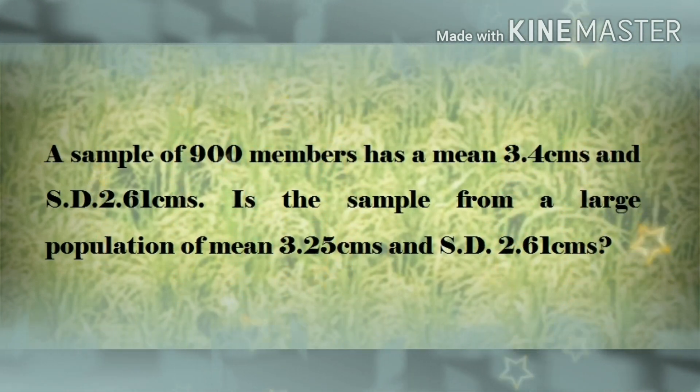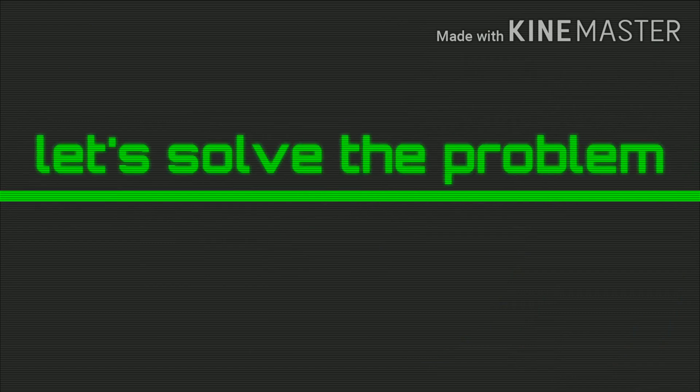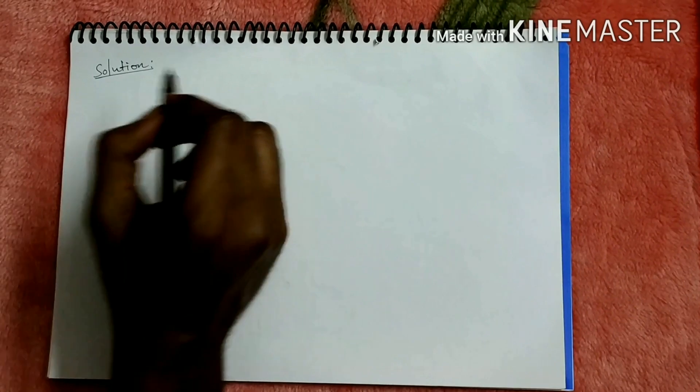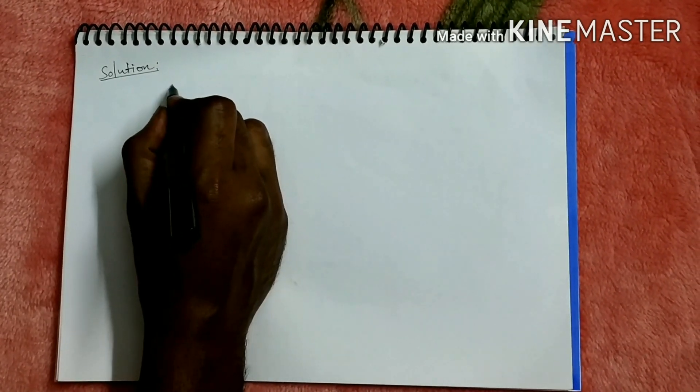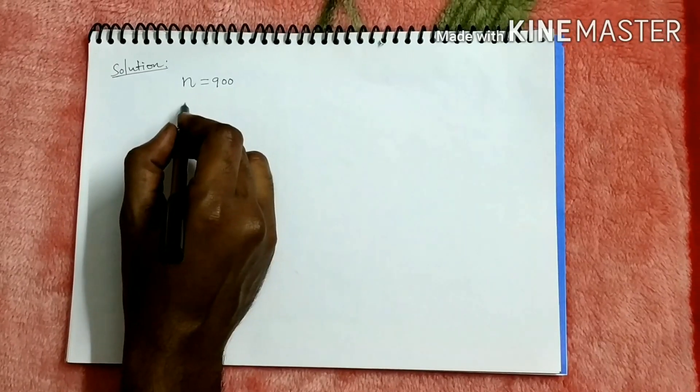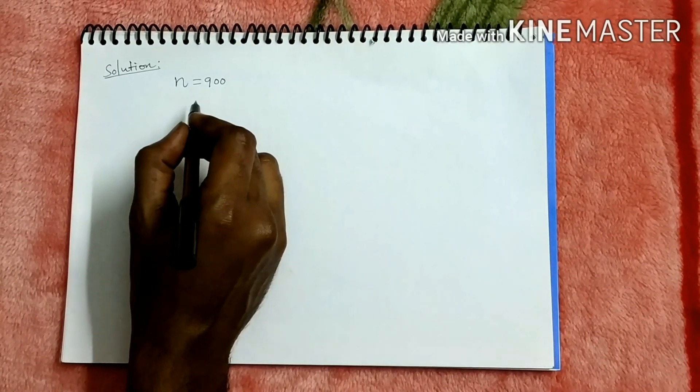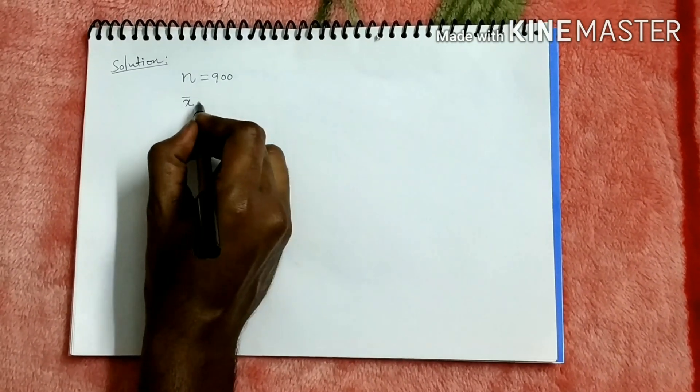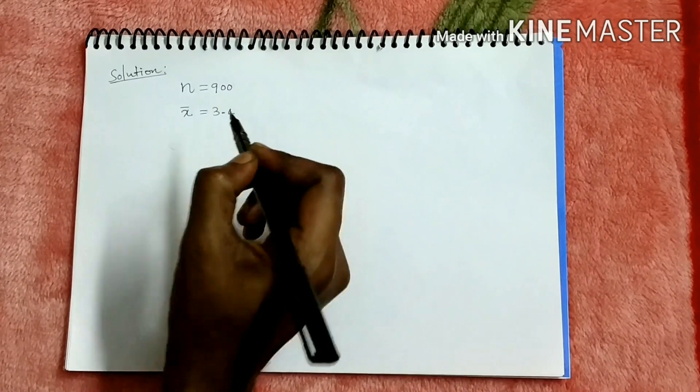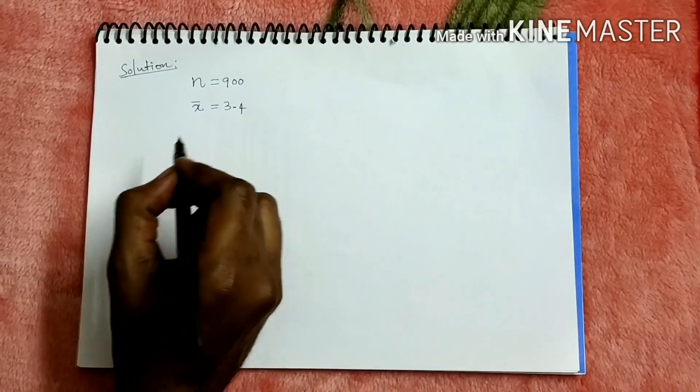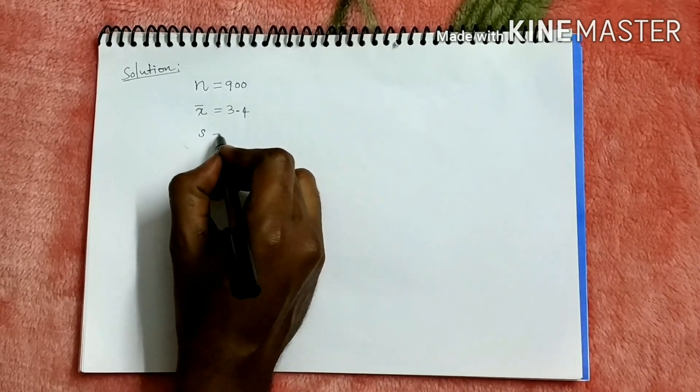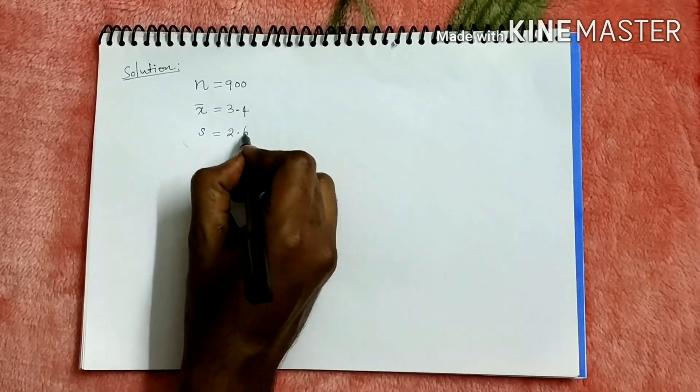The solution is: a sample of 900 members, that means sample size n is 900. Sample has mean, so sample mean x bar is 3.4 cm. Sample has standard deviation small s is 2.61 cm.